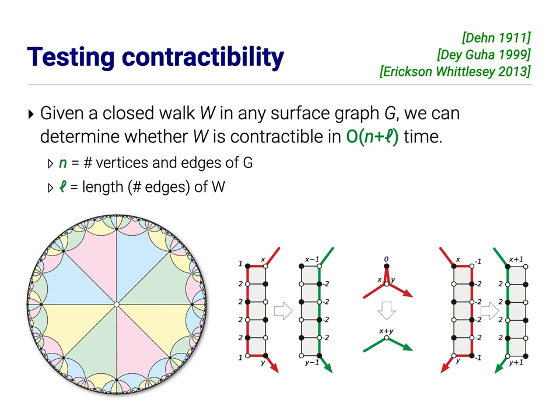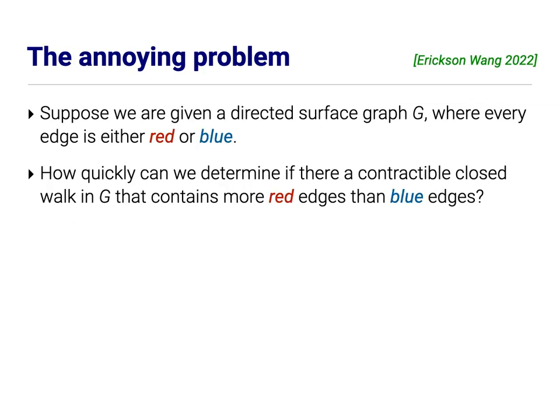So, one of the earliest algorithms in computational topology was by Max Dehn, the person who gave us Dehn codes and the interlacement property. In 1911, he described an algorithm for deciding whether a given curve on a surface is contractible or not. And in the context of graphs on surfaces, this has been, was turned into a couple of different algorithms, one by Dey and Guha in 1999 and another by Colin de Verdière, Erickson, and Whittlesey in 2013, that if I'm given a graph on any surface at all and then I'm given a closed walk in that graph, I can think of that closed walk as being a closed curve on the surface. I can determine whether that closed walk is contractible in linear time, linear in the complete description of the input, both the surface and the curve together. Again, this is a relatively simple algorithm. I don't want to talk about it in detail because we actually understand how to make this work on arbitrary surfaces.